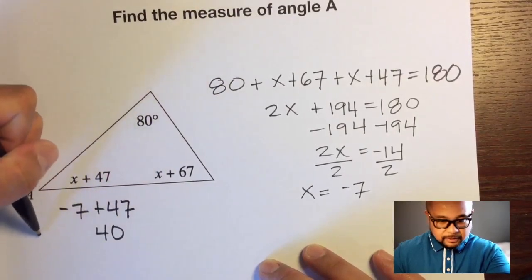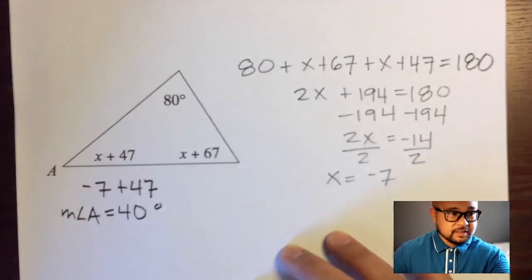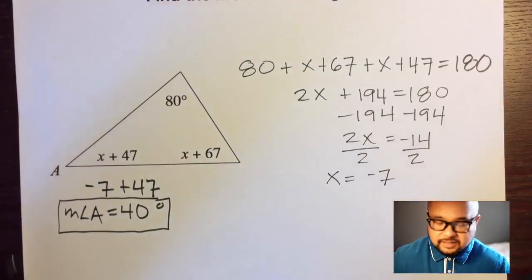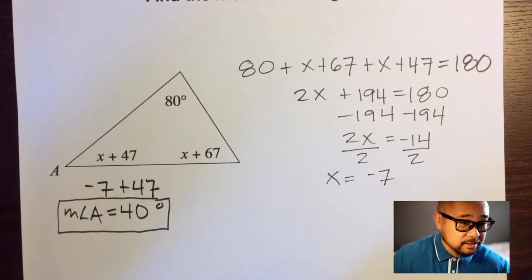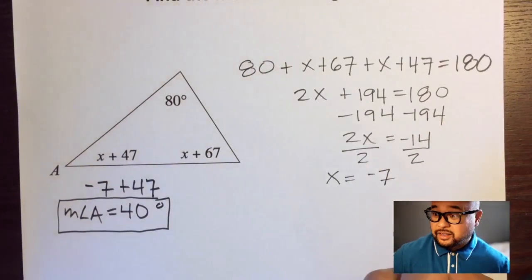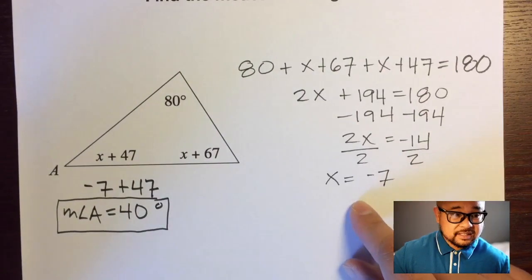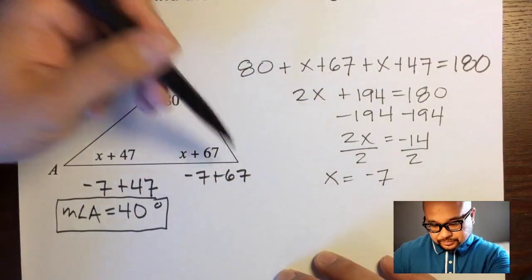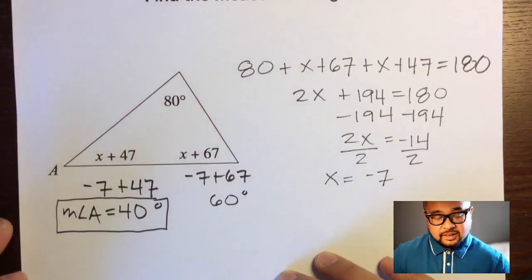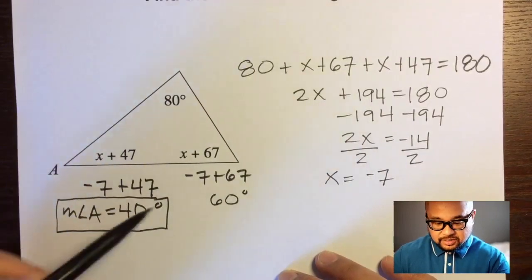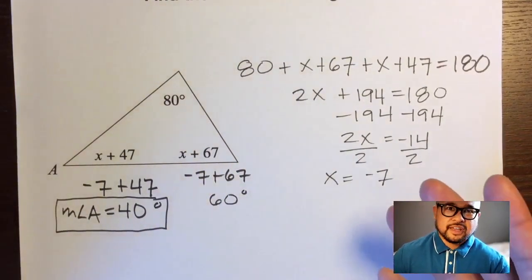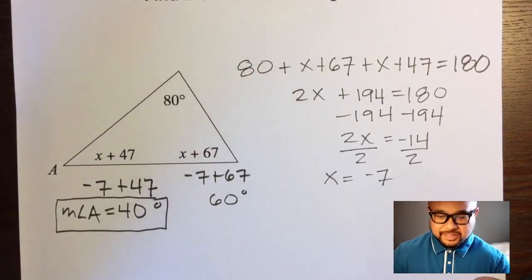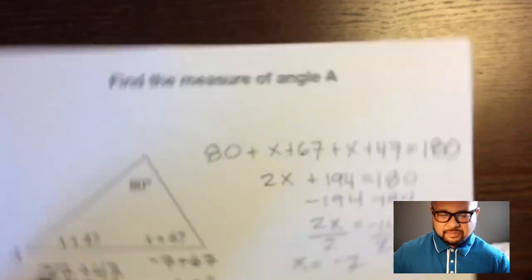We're not done — find the measure of angle A. We plug x equals negative 7 into angle A's expression: 47 plus (negative 7) is 40, so the measure of angle A equals 40 degrees. To verify, plug x into the other angle: negative 7 plus 67 is 60 degrees. Now add all three: 60 plus 40 plus 80 equals 180 degrees. We know all three angles add up to 180 degrees, so we're correct and one step closer to getting that 100 on a test.